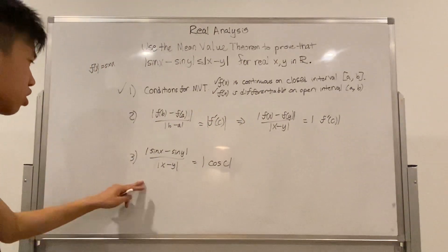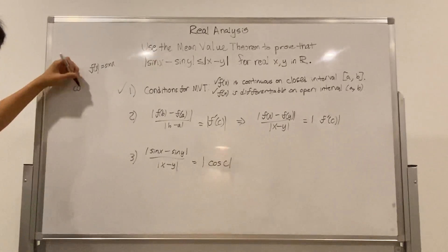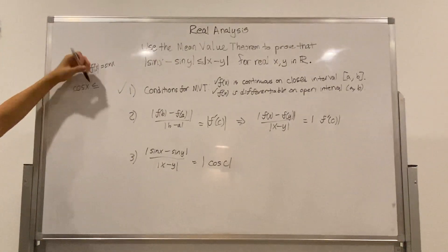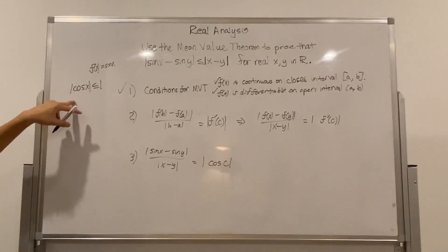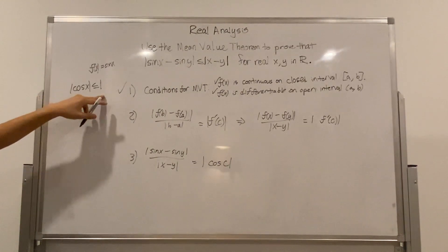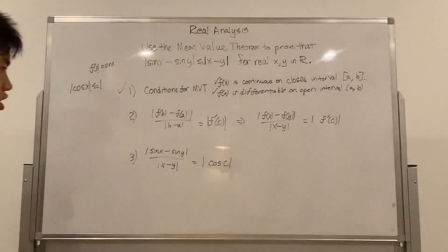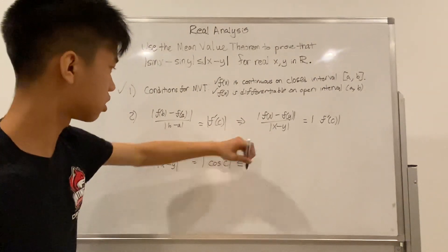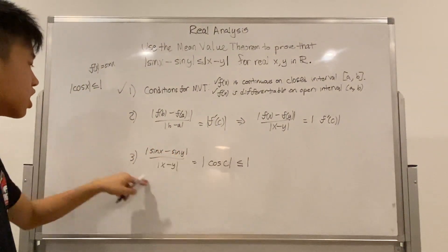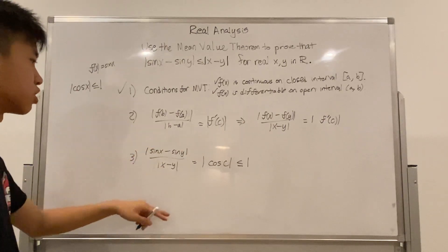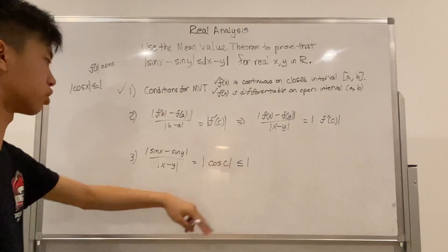And we know that cosine of x must always stay in between negative one and one, therefore the absolute value of cosine of x always has to be less than one. So what this means is that this sine x minus sine y over x minus y also must be equal to or less than one.